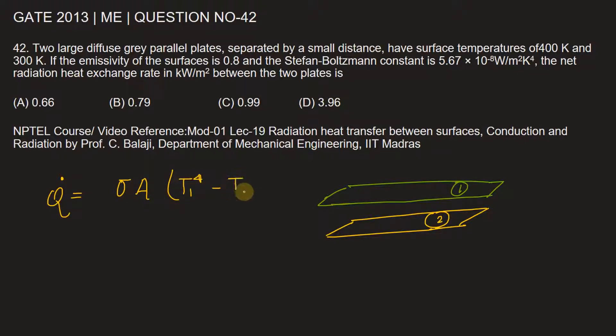All divided by 1 by epsilon 1 plus 1 by epsilon 2 minus 1.